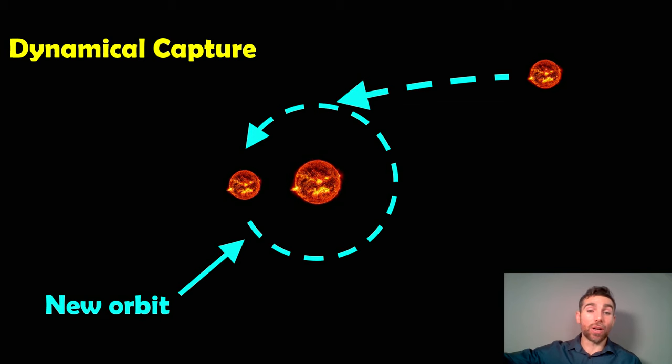They end up close enough to be influenced by each other's gravitational forces and end up on new orbits, essentially orbiting each other. If they formed from a larger cloud, they could be somewhat clustered anyway, so this is a plausible scenario for forming a binary star system.